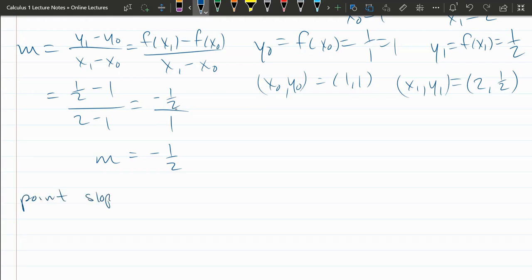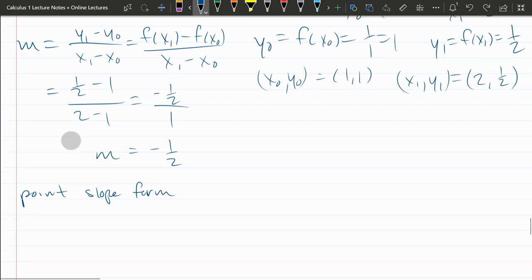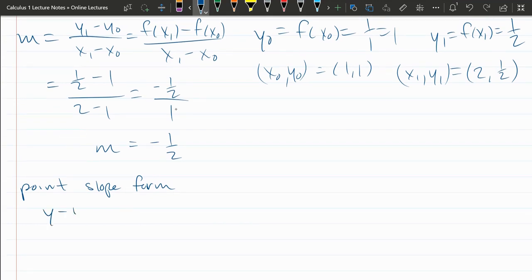And point slope form. Again, y-intercept form is great when you have a y-intercept. But my x values, neither of them are 0. So I do not know what the y-intercept is right now. I could compute it, but we're going to go with point slope form. y minus y0 equals m times x minus x0.